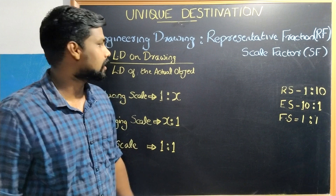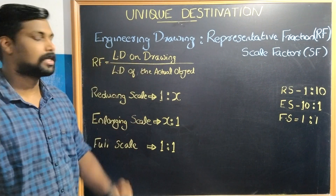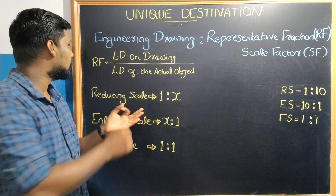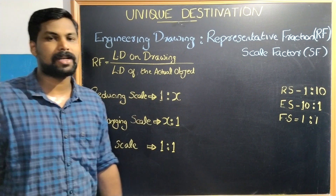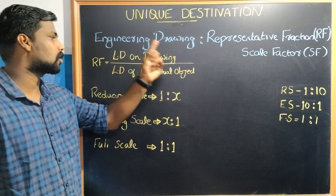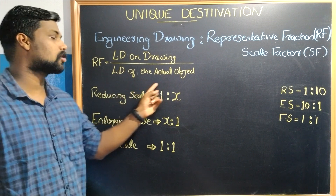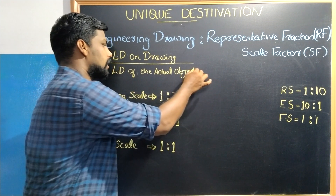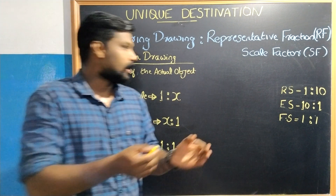We are going to define the representative fraction. It is defined as the ratio of the linear dimension on the drawing to the linear dimension of the actual object. For example,